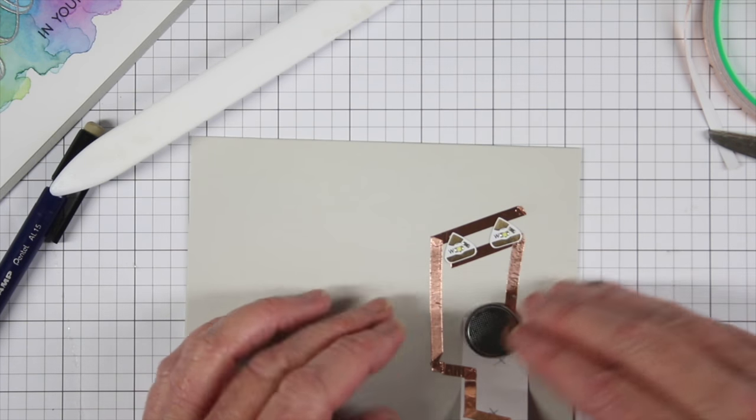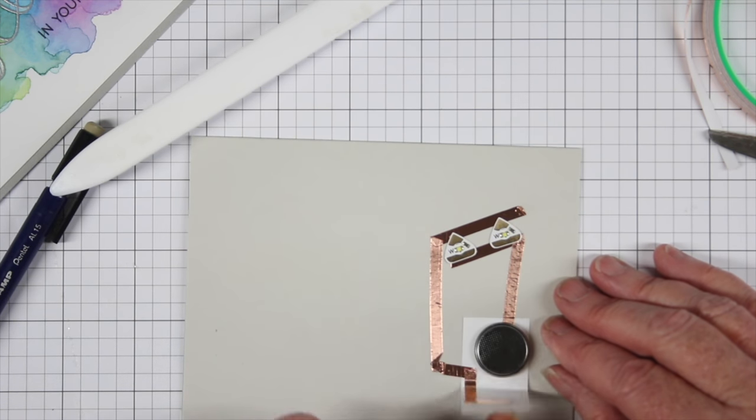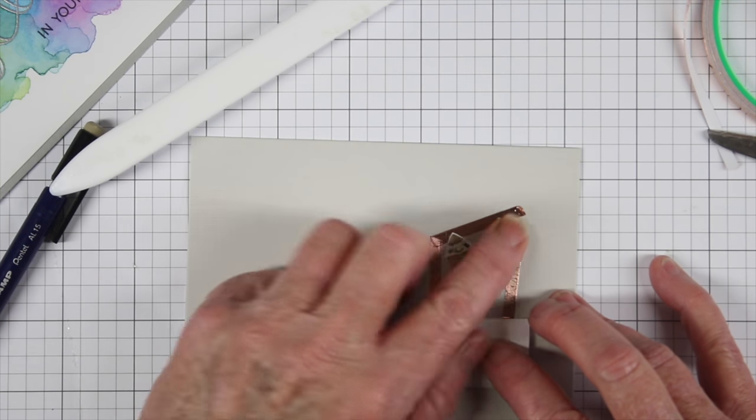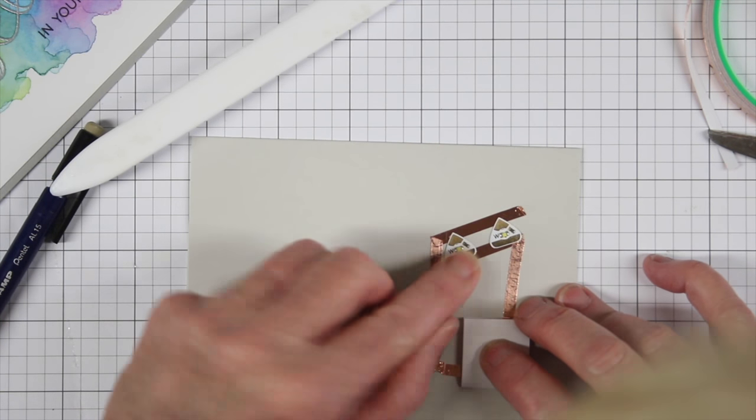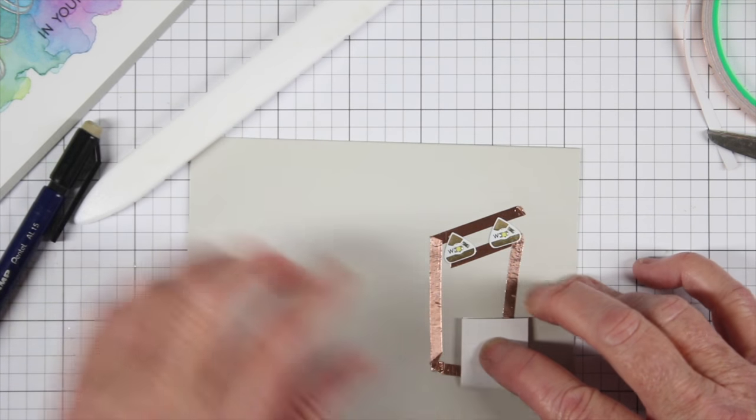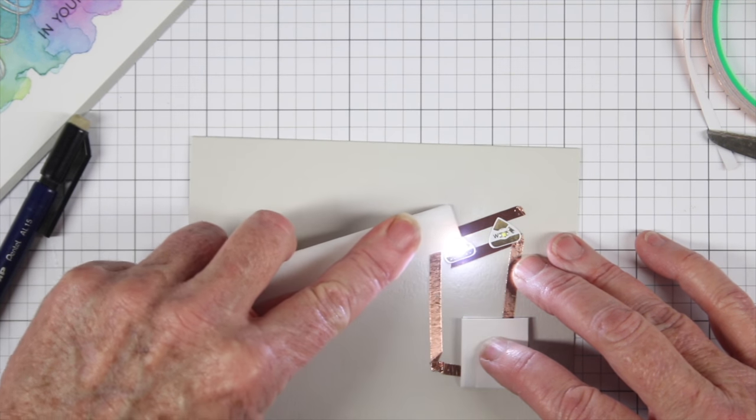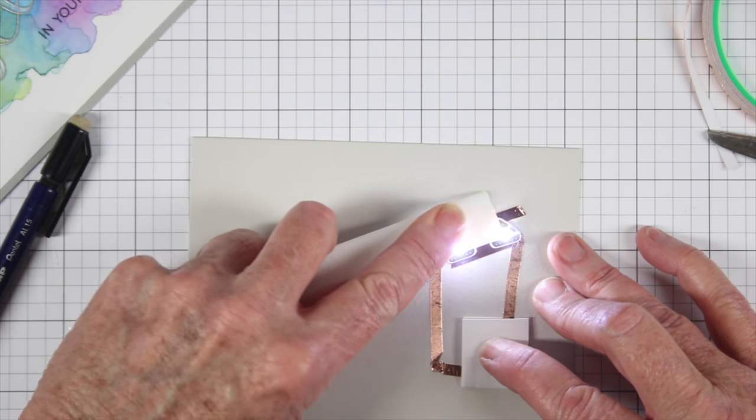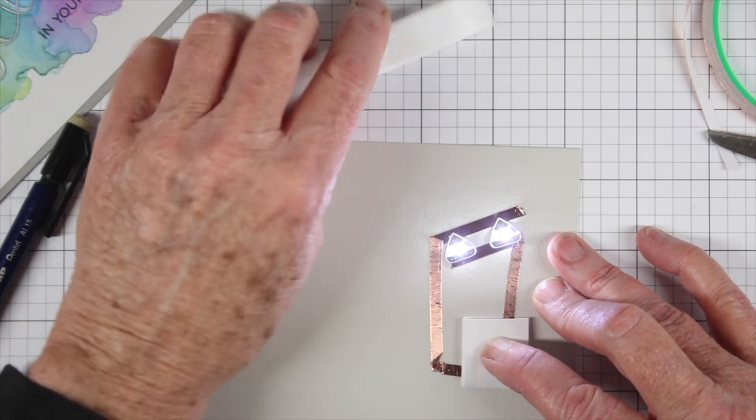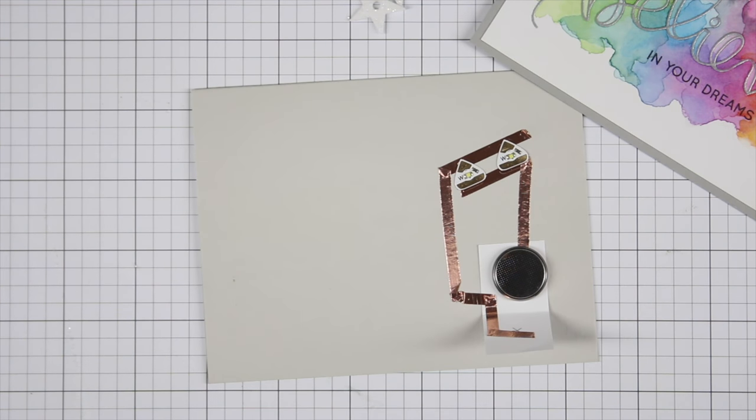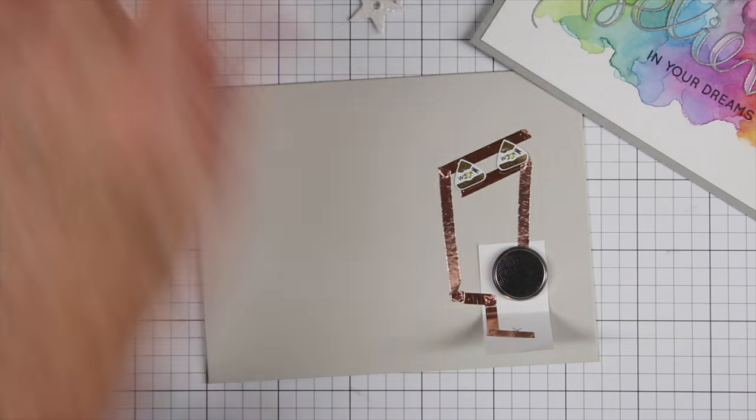So now I can place my battery down and shut my paper here. I need to press my lights down just a little bit more and I'll use my bone folder to press those down. But I do have a connection so I know that's working. All I have to do is just grab my bone folder and press that right into that copper tape and now I have both lighting.